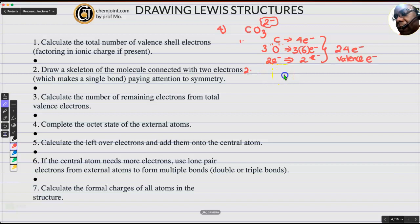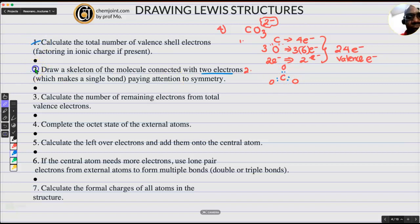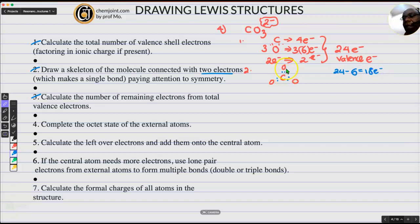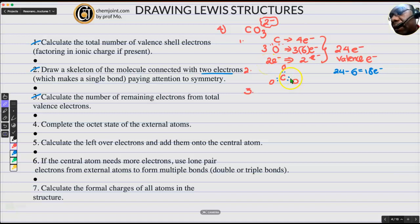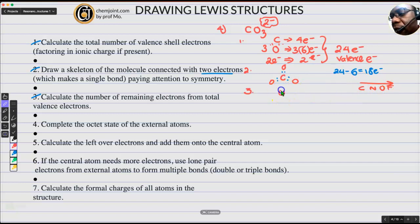Step number two, we want to look for symmetry. I'll put the carbon in the middle so that there's some sort of symmetry. And then I would want to use two electrons to connect each of them at least, so they are not just floating around in space. I have not used all electrons, so I'll go to step number three: calculate the number of electrons remaining from the total. I've used 6, so 24 minus 6 gives you 18 electrons. The carbon and the oxygens are not surrounded by eight electrons. The rule to determine who gets the extra electrons first is electronegativity — the affinity and attraction of electrons by an element. Oxygen is more electronegative than carbon across that row of the periodic table.